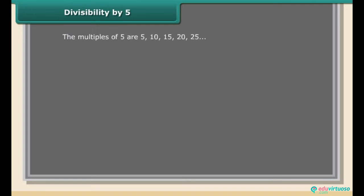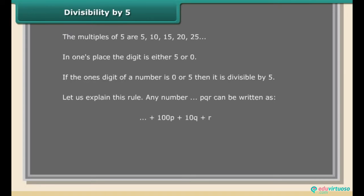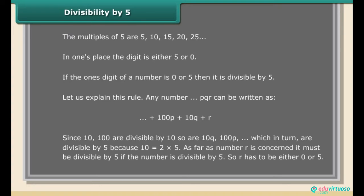Divisibility by 5. The multiples of 5 are 5, 10, 15, 20, 25, and so on; in the ones place the digit is either 5 or 0. For any number PQR = 100P + 10Q + R, since 100P and 10Q are divisible by 5 (because 10 = 2 × 5), the number is divisible by 5 only when R is 0 or 5.